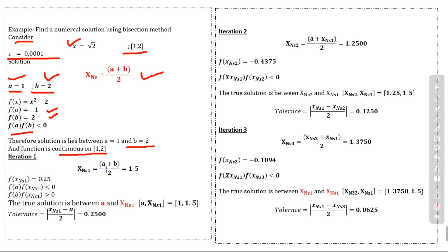First iteration: x1 = (a + b) / 2 = (1 + 2) / 2 = 1.5. We check the sign of the function at this new estimated solution: f(x1) = 0.25, which is positive. We compute f(a) · f(x1) < 0 and f(b) · f(x1) > 0, which means the true solution is between a and x1. So our new interval is [1, 1.5].